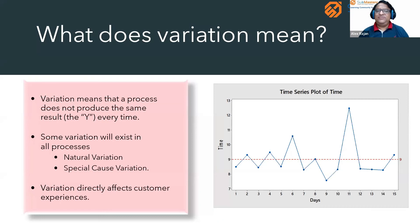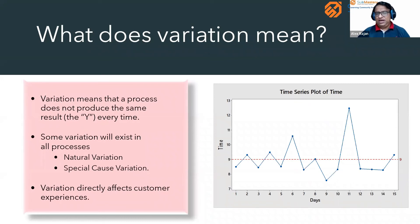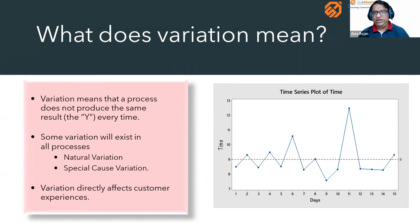We measure variation by looking at standard deviation. If the standard deviation is very high, we are seeing a lot of variation and we say there is a problem in the process. We try to reduce that variation using the Six Sigma approach.